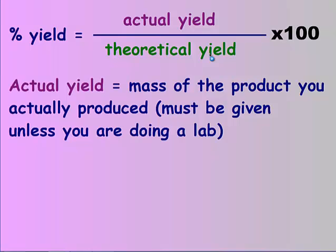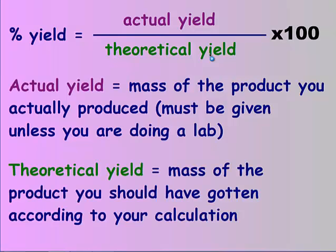Theoretical yield is what we've been doing. Theoretically, if I start with a certain amount I should end with a certain amount. So it's the mass of the product you should have gotten according to your calculation.